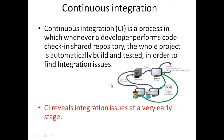In the current software development process, as soon as a developer builds a module, he checks in the code and it goes to the centralized repository. When integrating two modules, he wants to check whether the build is stable. He will do unit testing at his end, but integration testing will be done by the testing team. The final build is then deployed onto the staging or production server.